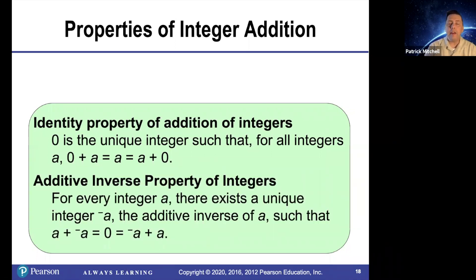And this is something that we didn't have with whole numbers — we did not have additive inverses. For every integer a, there exists a unique integer, the opposite of a, also called the additive inverse of a, such that a plus the opposite of a is equal to zero.